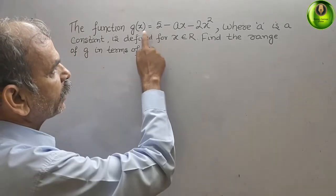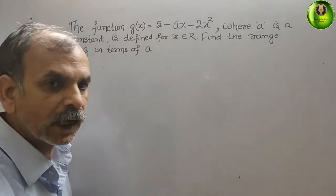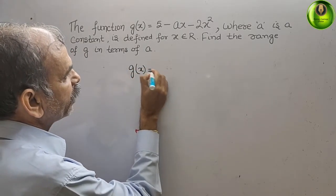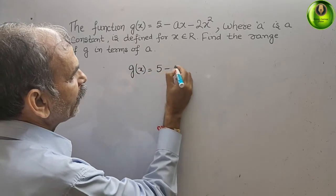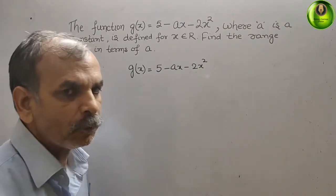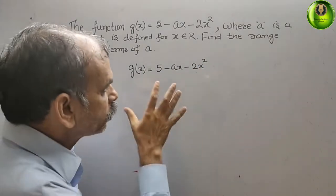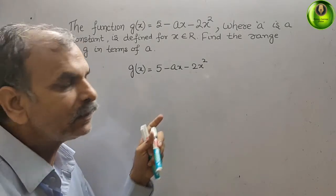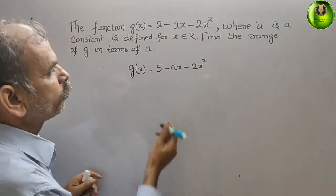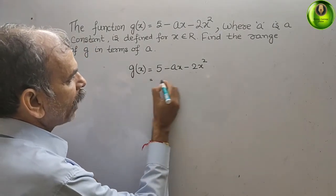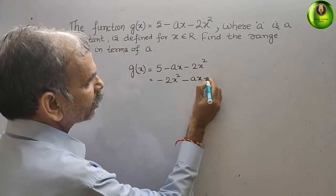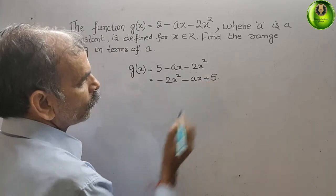We have given the equation g(x). We will write: g(x) is nothing but φ minus ax minus 2x squared. Now we will try to make it in standard form. The power is in increasing order, so we will go for decreasing order: minus 2x squared minus ax plus φ.